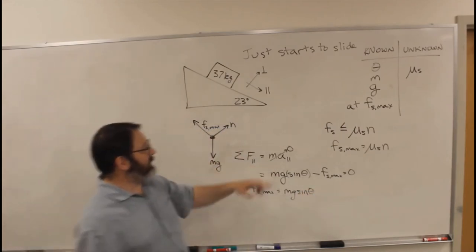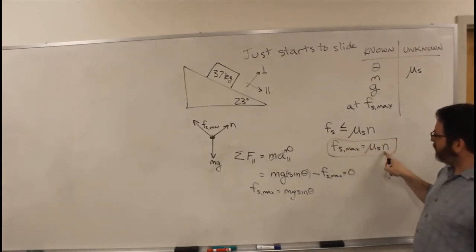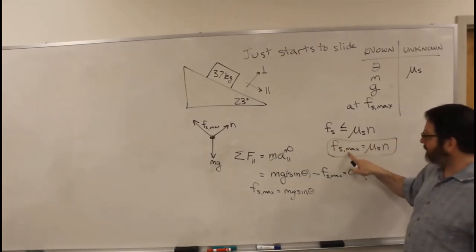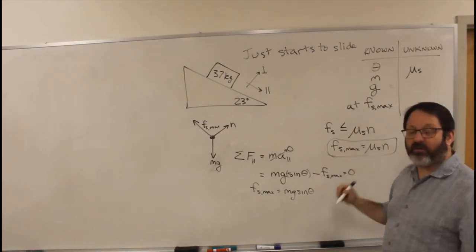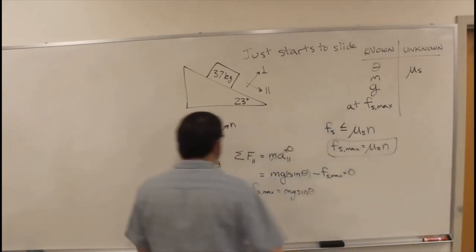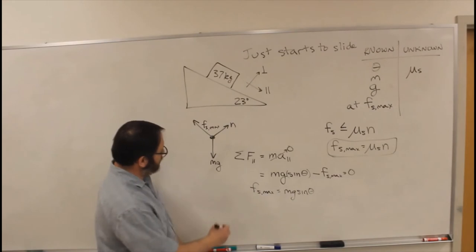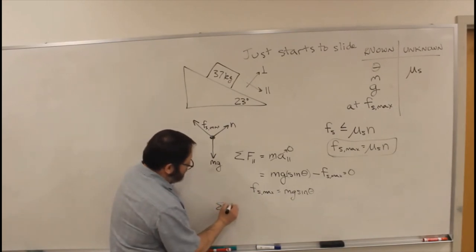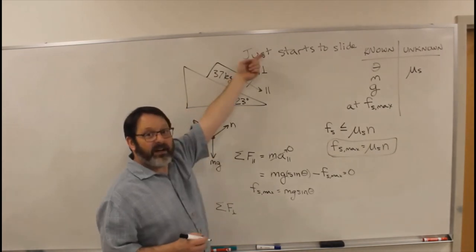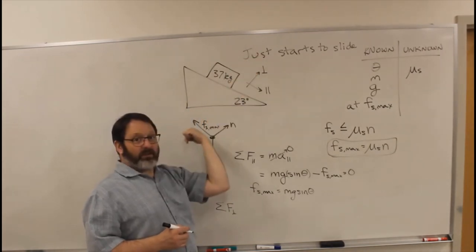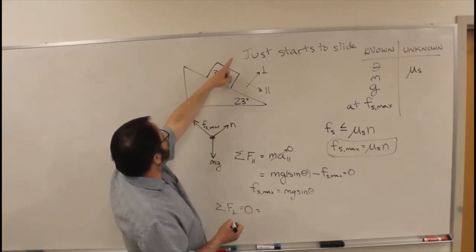Okay, now we're getting somewhere. In this equation, we used to not know normal force or Fs max. Now we know Fs max. We still don't know the normal force. So I guess we're going to have to deal with the other direction as well. So if we do that direction, sum of forces in the perpendicular direction. It's not accelerating up off the ramp or down into the ramp. So that has to be zero.